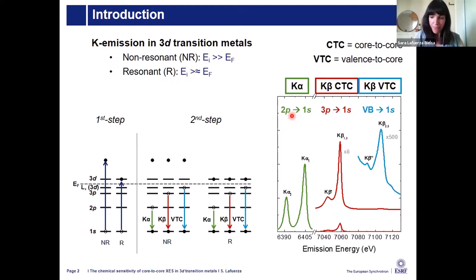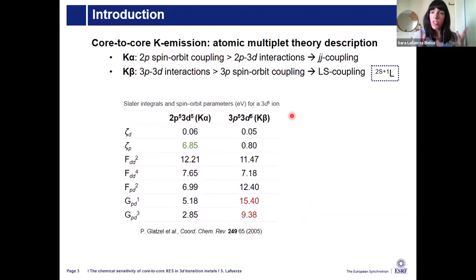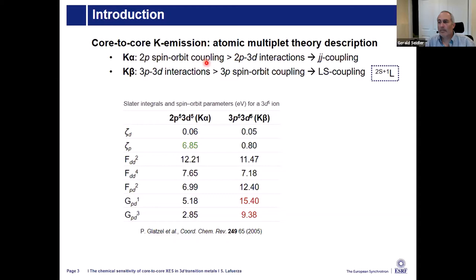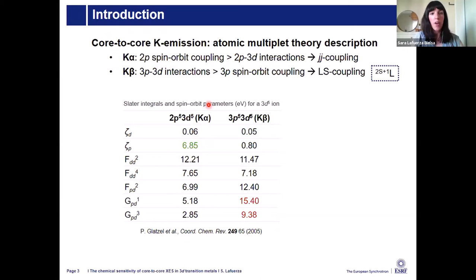Due to the overlap of the 2P and 3P wave functions with the 3D valence shell, the chemical sensitivity is considerable and quite useful. Electron-electron interactions are the dominant mechanism shaping the core-to-core emission lines, both K-alpha and K-beta, but there is an important difference. In K-alpha, the dominant interaction is 2P spin-orbit coupling, which is greater than the 2P-3D interactions. Here in this table, for a simple 3D-5 ion, I show the values of the Slater integrals and the spin-orbit parameters for the K-alpha and K-beta transitions.